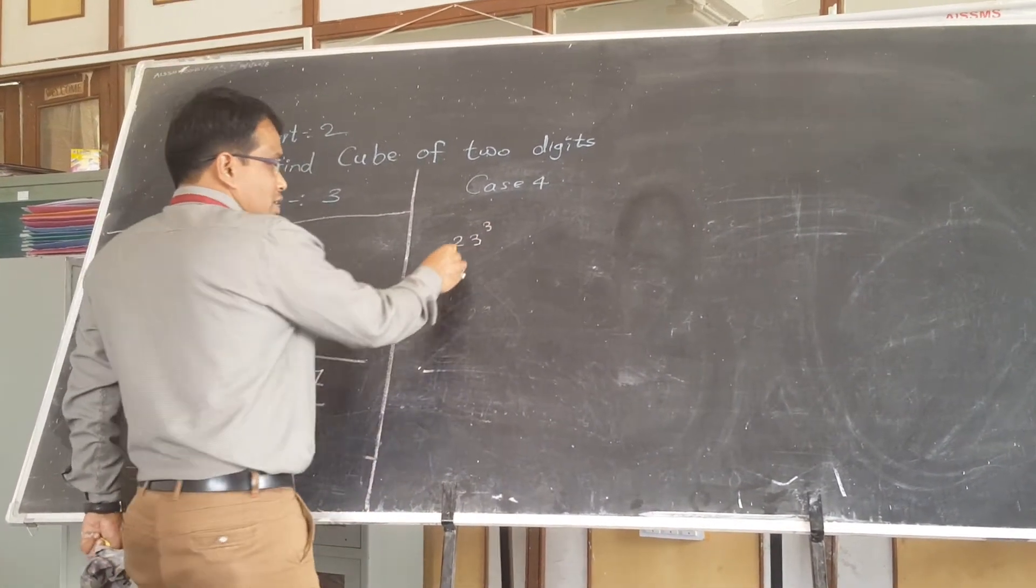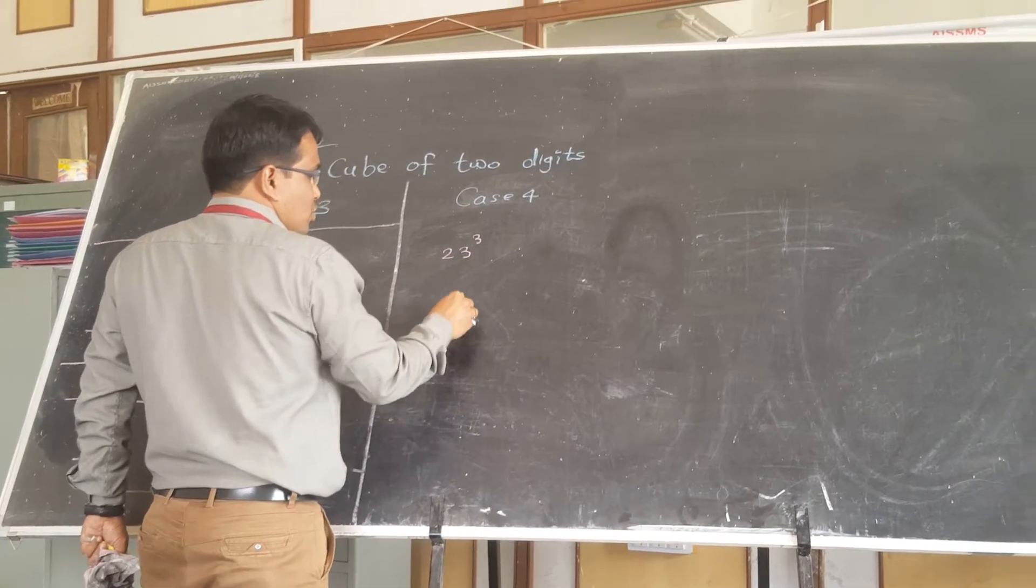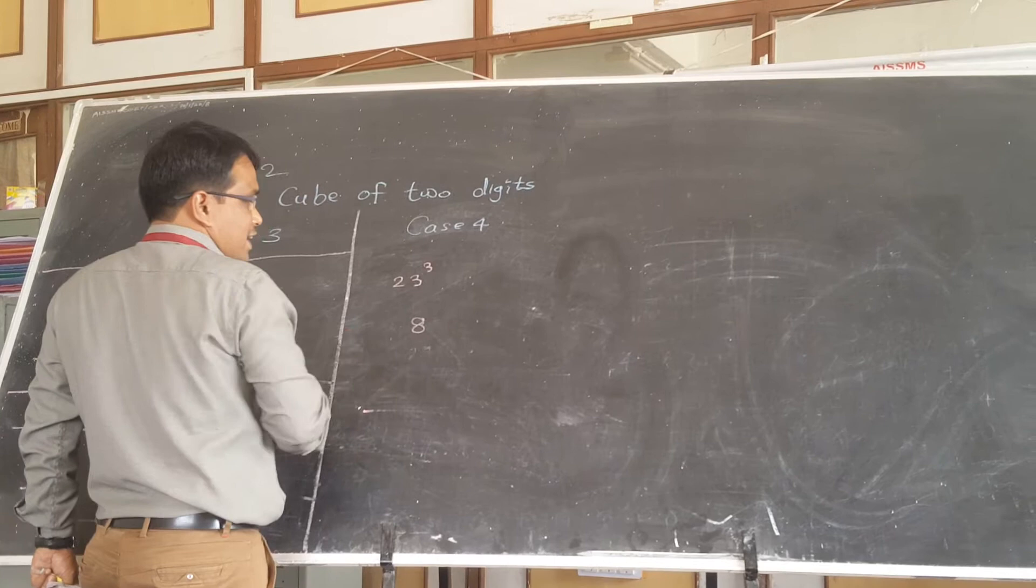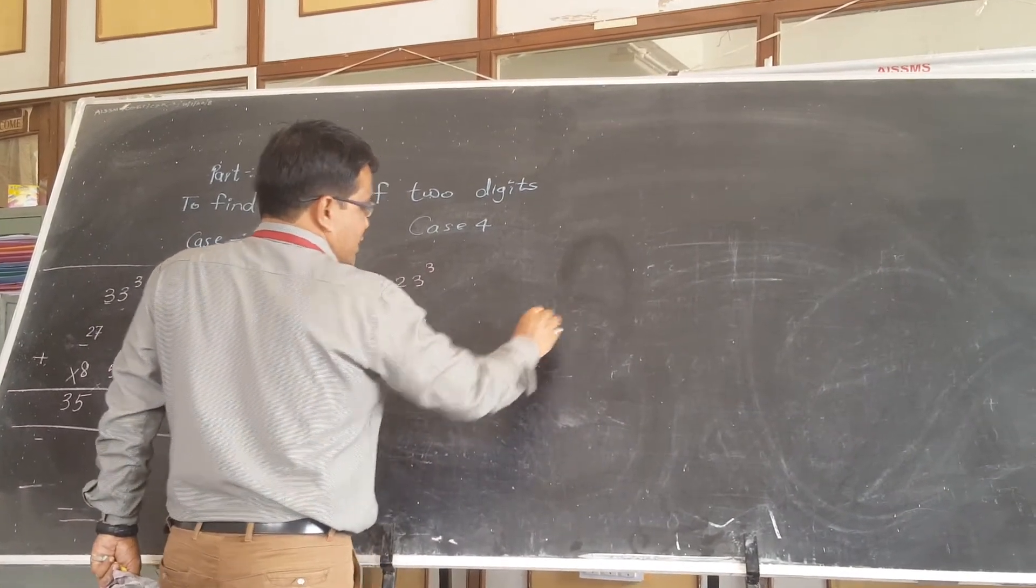What I am going to do: take the cube of the first digit. The first digit is 2, cube of 2 is 8. Take the cube of the last digit, cube of the last digit is 27.